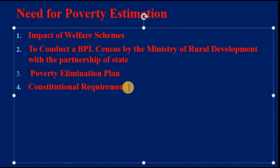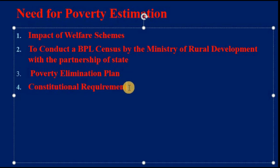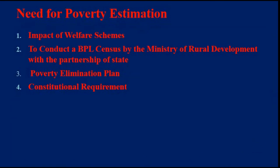A further argument in favor of estimating poverty is that it plays the way for poverty elimination. It prepares the ground for a just and equitable society, to bring some constitutional requirements, to create an equitable society and to bring justification for all — both rich and poor. That is the very reason they are estimating poverty.